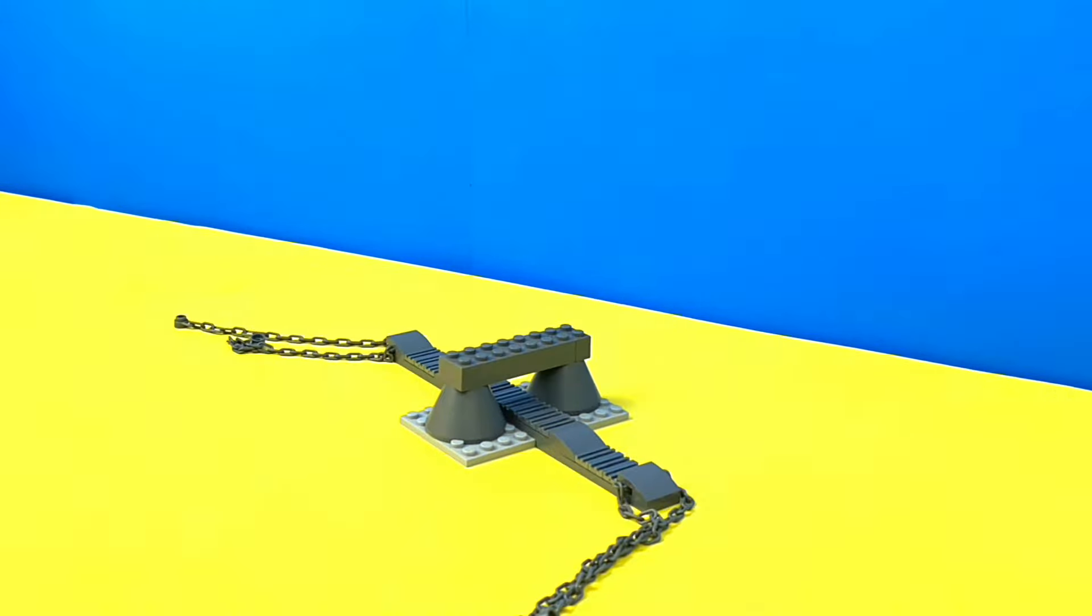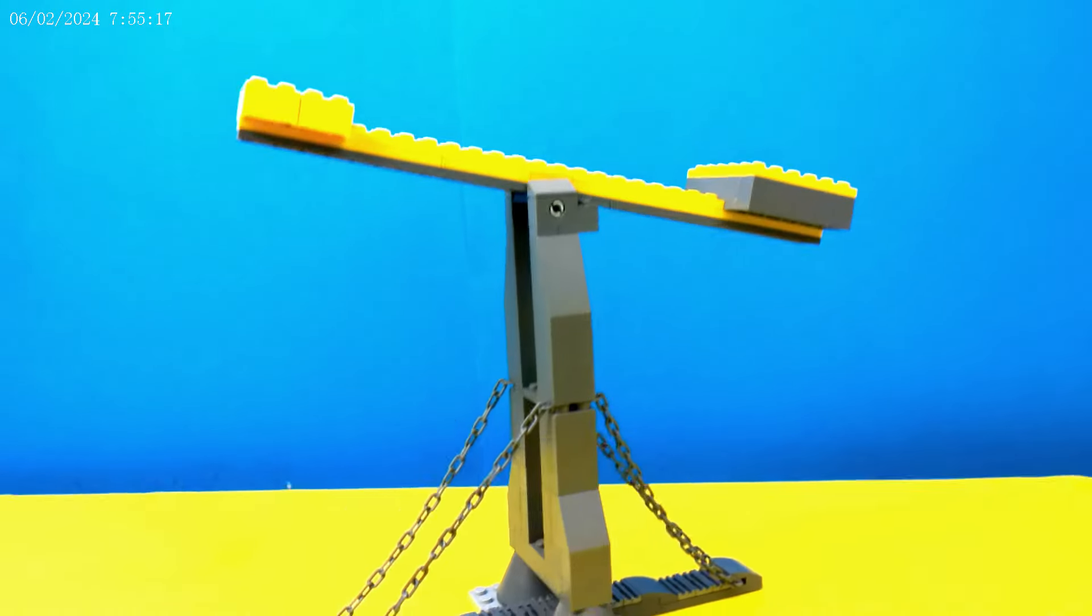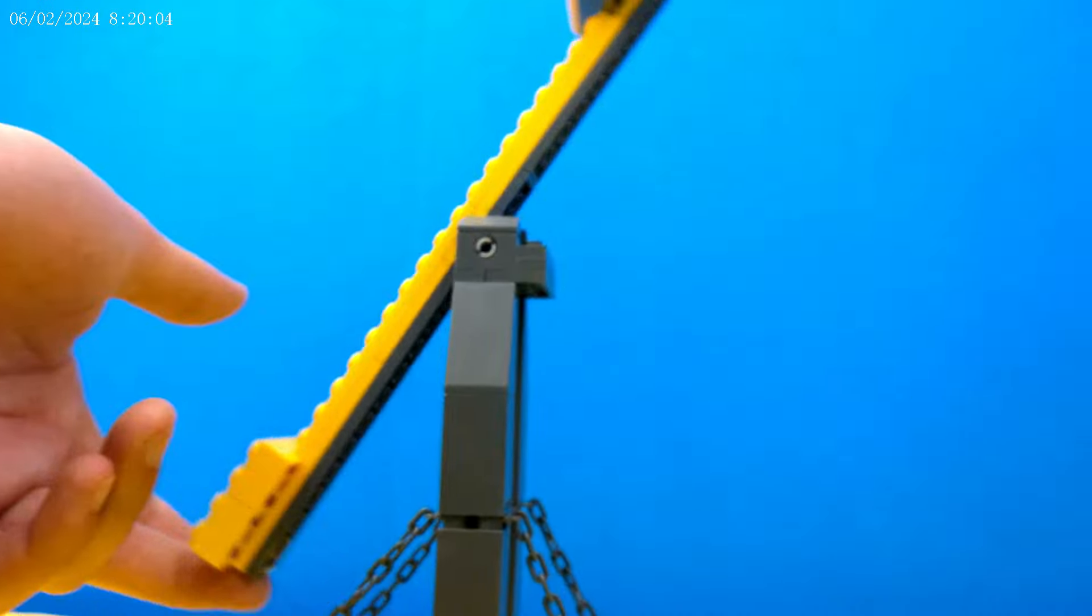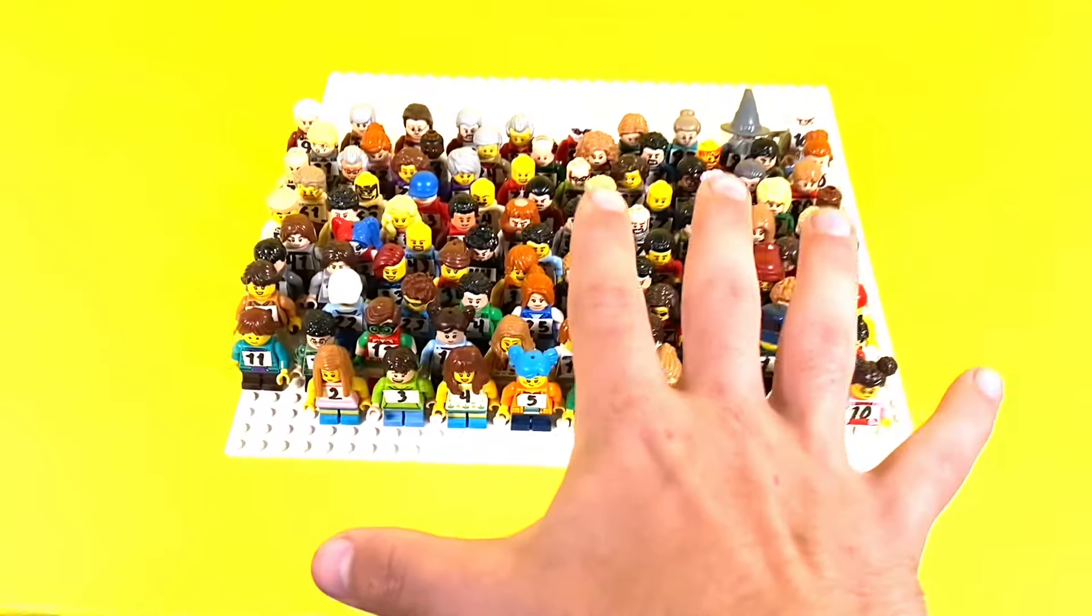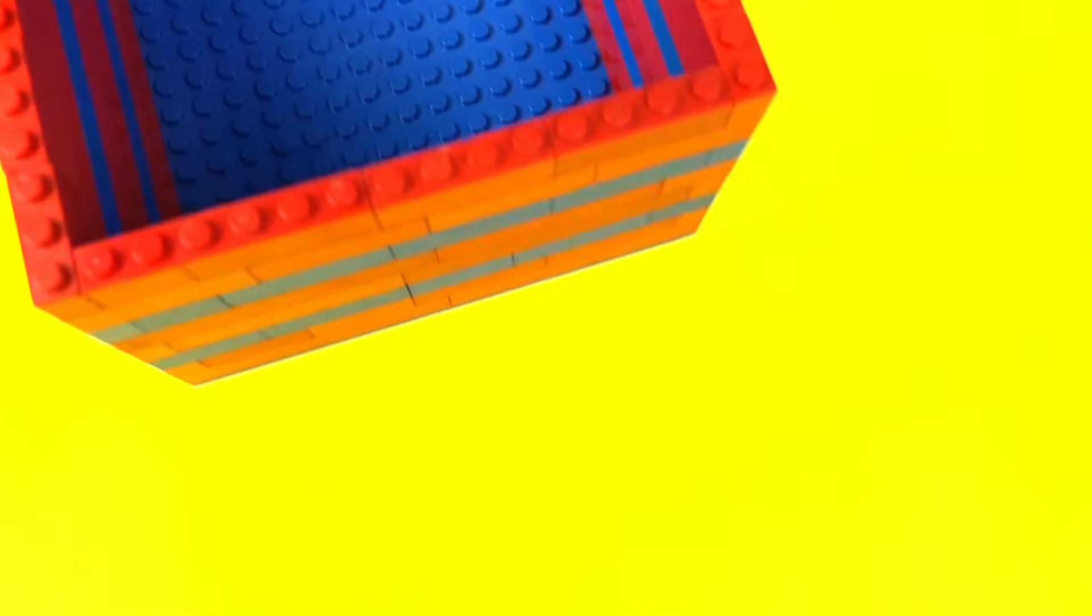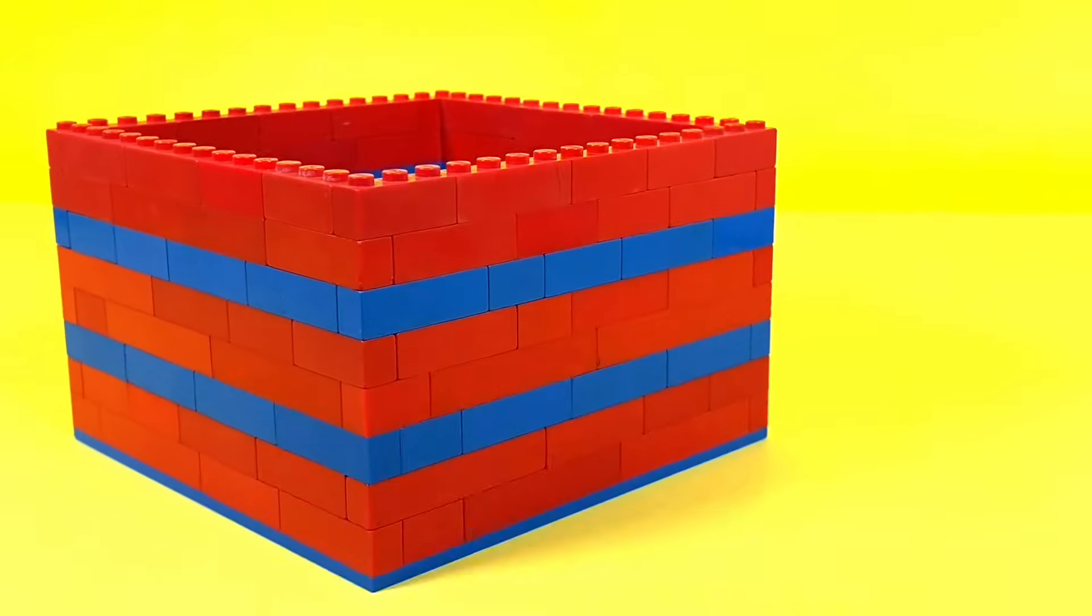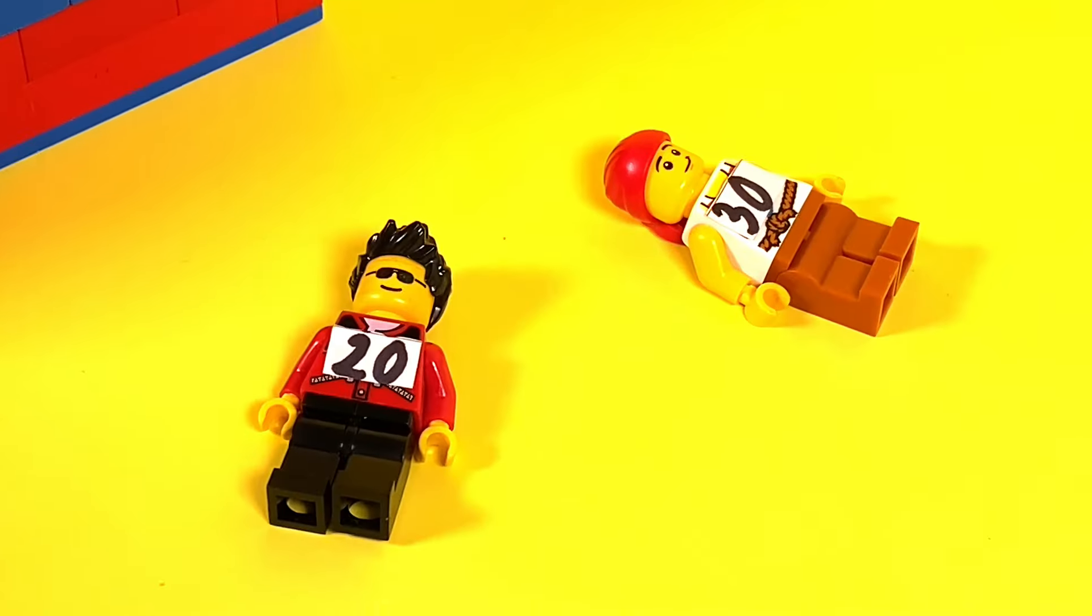This first challenge will launch you at unbelievable speeds, and if you guessed a cannon, then you are incorrect. I built a catapult, and this thing is terrifying. Just look at them. They're scared. So the challenge is simple. We launch them from this end of the table all the way to the other end, and there we have this box to catch them. They'll all be launched at the same speed, but if they do not make it in the bucket, they are eliminated.